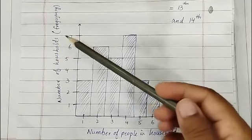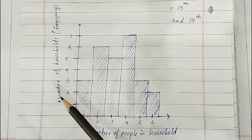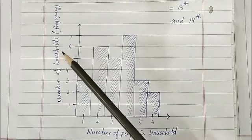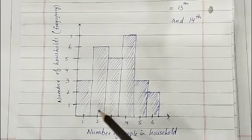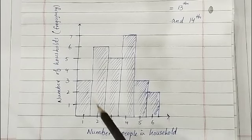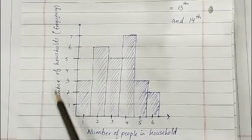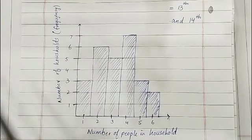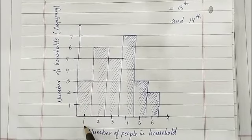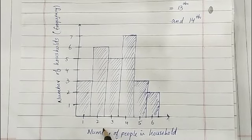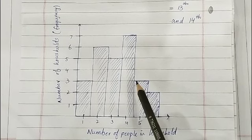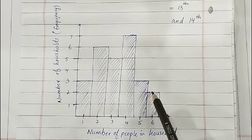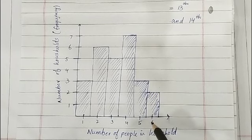On the left-hand side, on the vertical line of the histogram, there is the number of households — the frequency of the households, how many households are there in that apartment building. On the x-axis, the horizontal line, the number of people in a household is given. The maximum quantity is six, and the maximum frequency is seven. So: three households have one person, six households have two people, five households have three people, seven households have four people, three households have five people, and two households have six people.